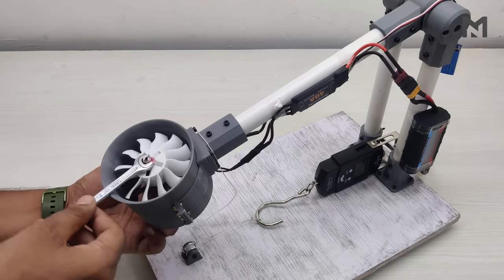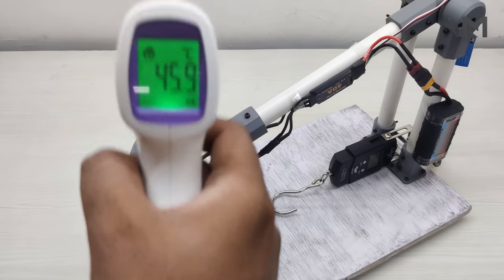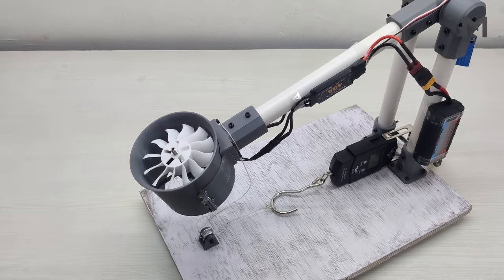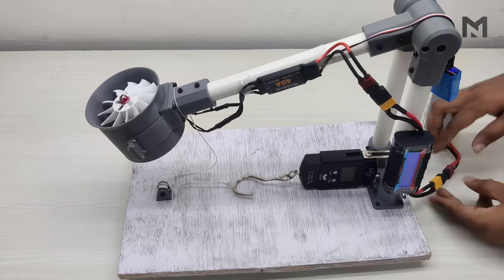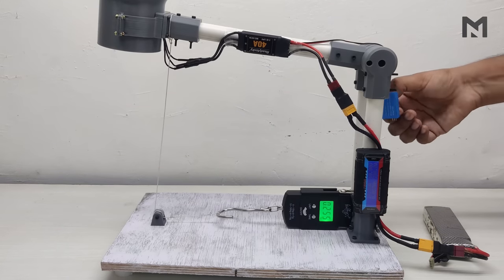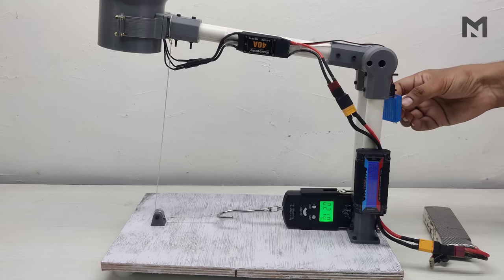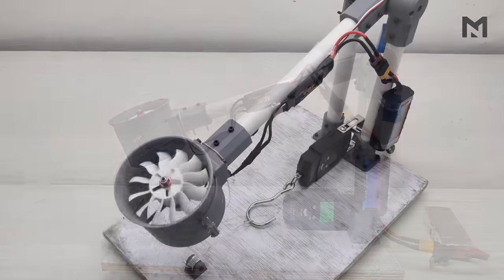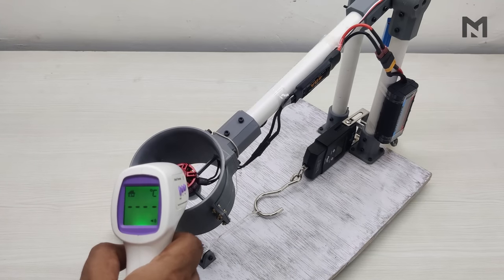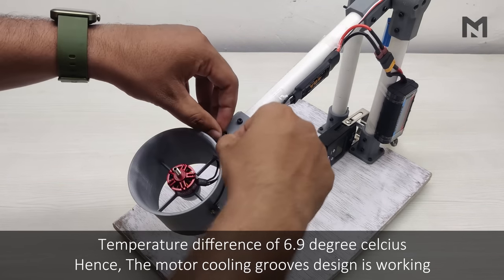The current temperature of the motor is 45.9 degrees Celsius. I have run the motor for about 10 seconds and now I will check its temperature. The temperature came around to be 39.6 degrees Celsius, which is about 6.9 degrees Celsius less than the previous one. Hence, the cooling grooves of the motor are working correctly.